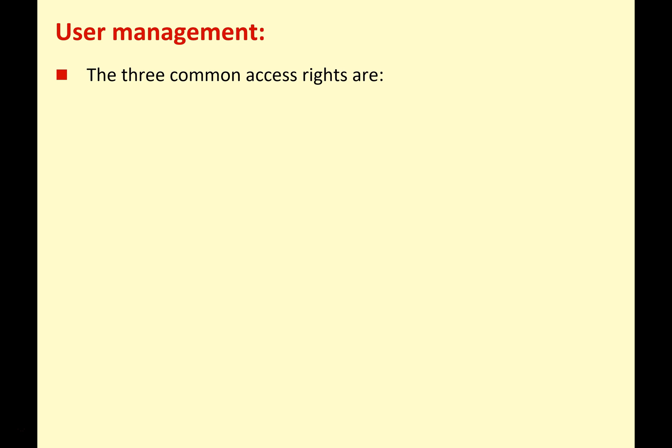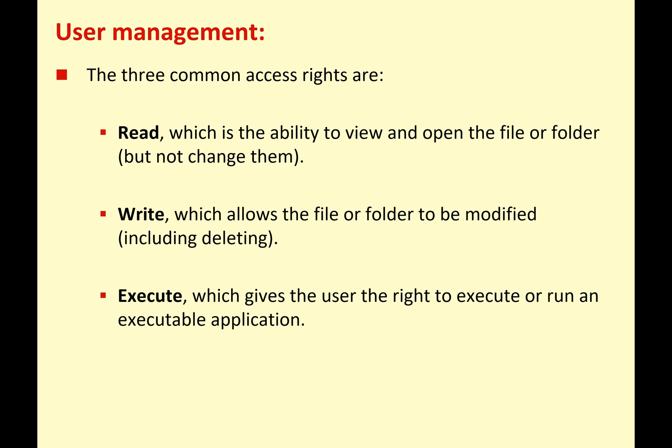The three common access rights that you need to know are: read, which is the ability to view and open files or folders but not change them; write, which allows a file or folder to be modified, including deleting; and execute, which gives the user the right to run an executable program.